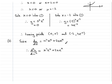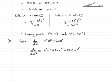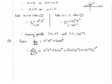For the second term we use the product rule with u = 2x and v = eˣ. So we get: 2x multiplied by the differential of eˣ, which is eˣ, plus eˣ multiplied by the differential of 2x, which is 2.